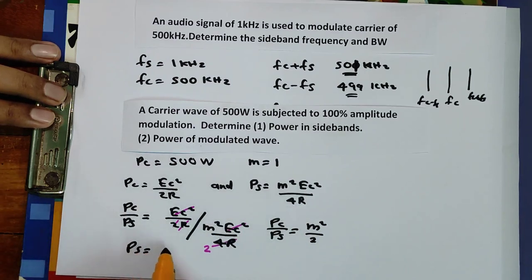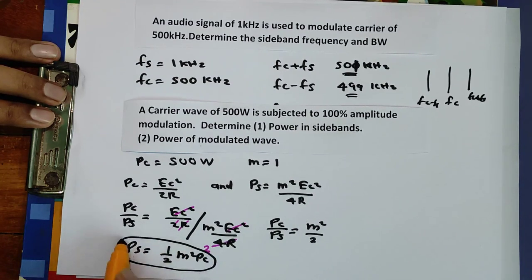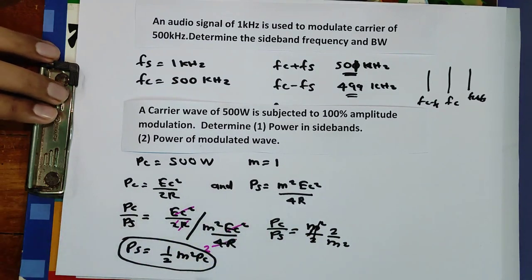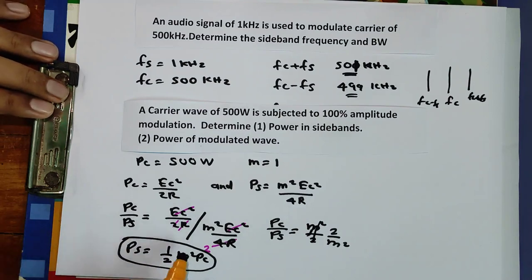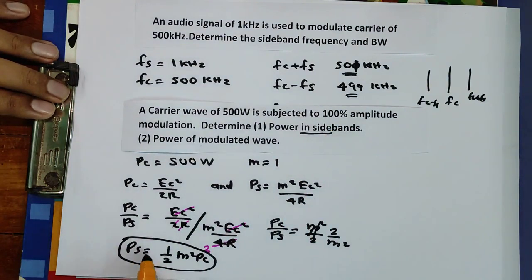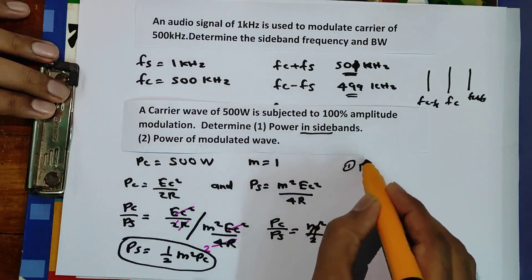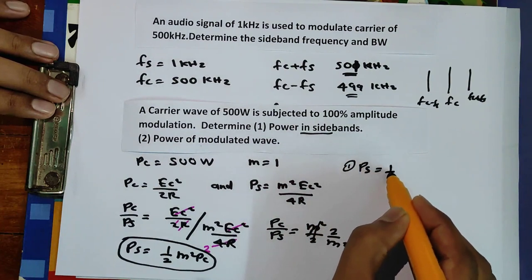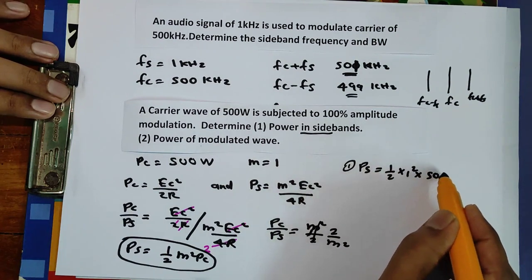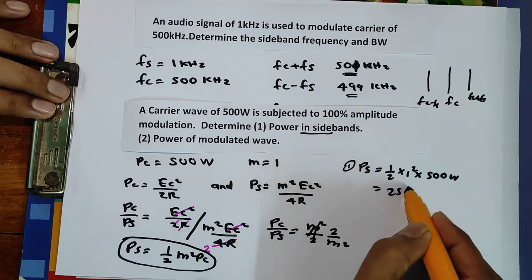Therefore the relation is Ps = ½·m²·Pc. Substituting m = 1 and Pc = 500 watts gives Ps = ½ × 1² × 500 = 250 watts.